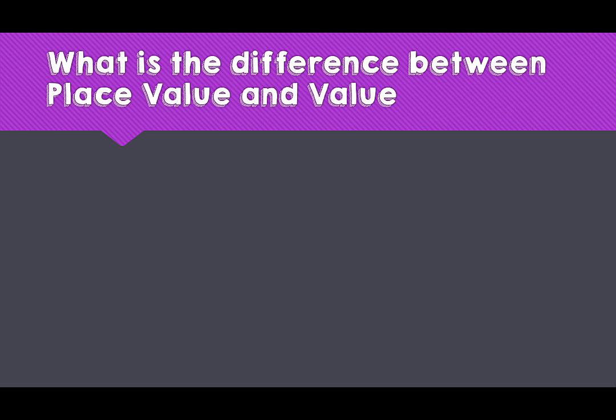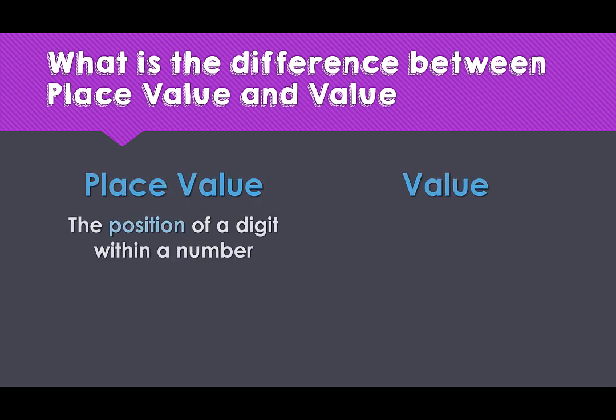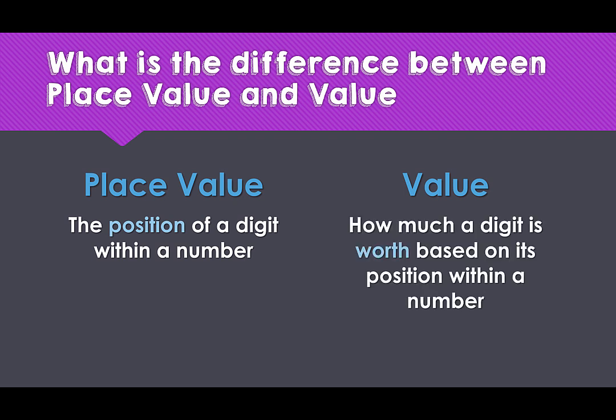Now that we have understood the place value columns and how to read large numbers, let's have a look at the difference between place value and a digit's value. Place value is the position of a digit within a number, whereas the value of a digit is how much it is worth based on its position within a number.